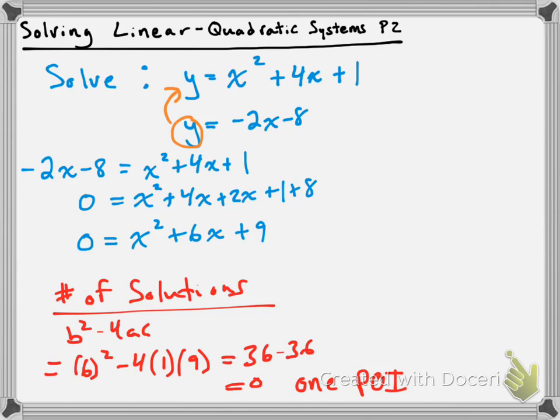So to find that point of intersection, we can solve the above quadratic equation now, so we can use whatever method we want. We can factor, we can use the quadratic formula, or whatever. This one's factorable, so I'm going to factor it, but if you want to use the quadratic formula, that's fine.